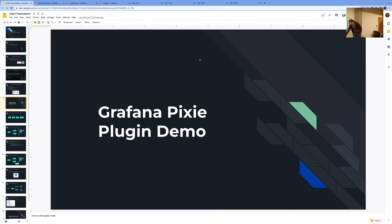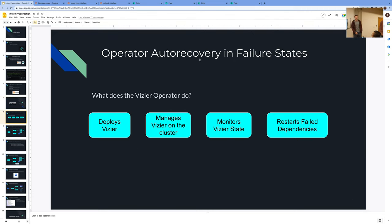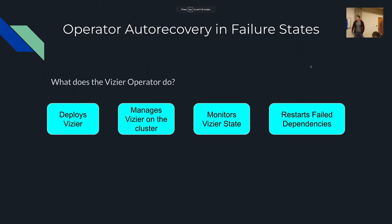Now we'll move on to some of the work done after finishing the Grafana improvements. The next thing I worked on was having the operator auto-recover in failure states. The Vizier operator deploys Vizier into your cluster, manages it, monitors its state, and can restart different pods based on their failed dependencies.